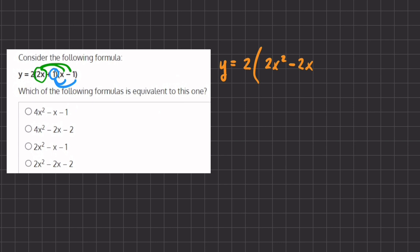If we do so we have 1 times x which will give us x and 1 times negative 1 which gives us negative 1.